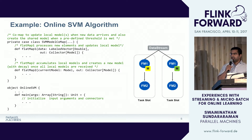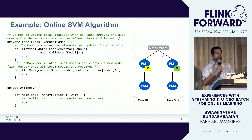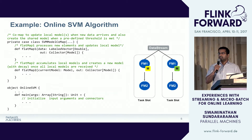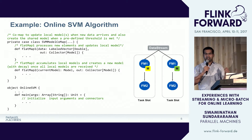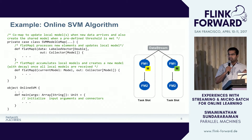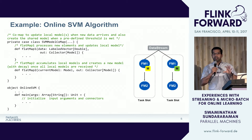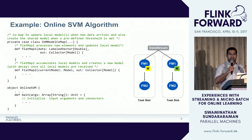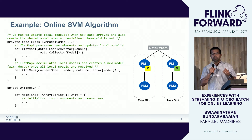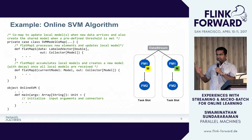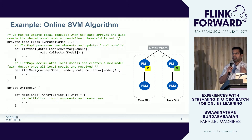Coming to online algorithms, I'm going to give an example in the context of SVM, though this is applicable to other algorithms as well. There are two important challenges when thinking about online algorithms. The first challenge is that we need to process data all the time without stopping to synchronize or do additional computation, because this slows things down and increases latency. The second challenge is that we need to parallelize these tasks in order to ingest large volumes of streams so that we can learn quickly and adapt faster.